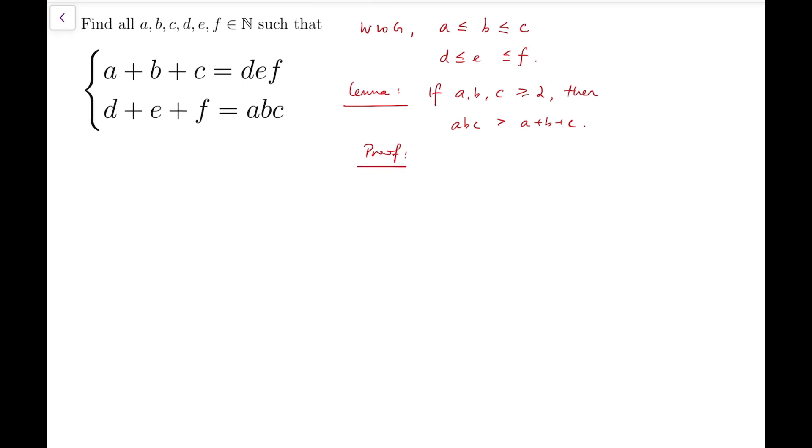So I'm going to assume the contrary, that means that abc is less than or equal to a plus b plus c. Now we know that a, b, c are all at least two.